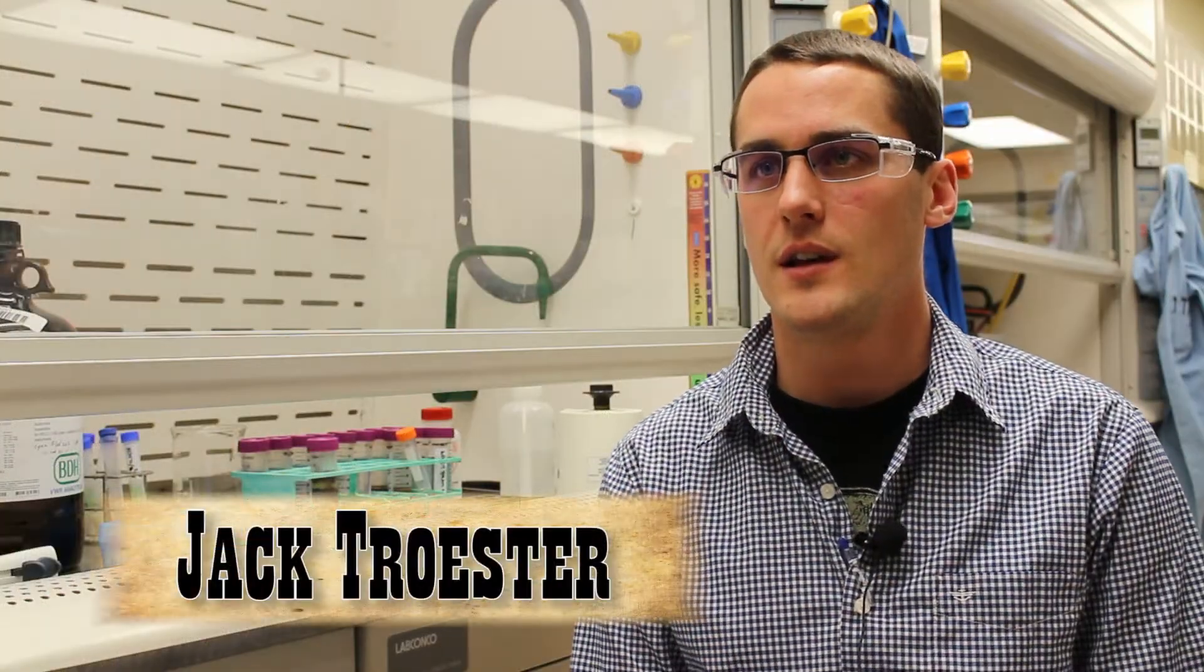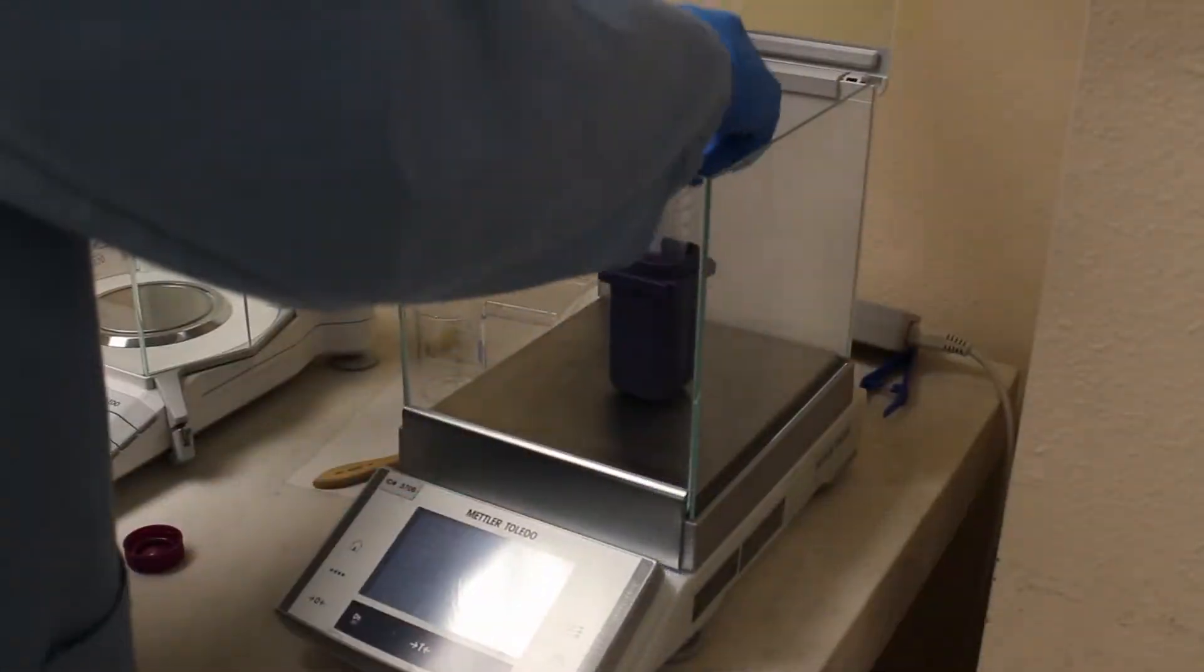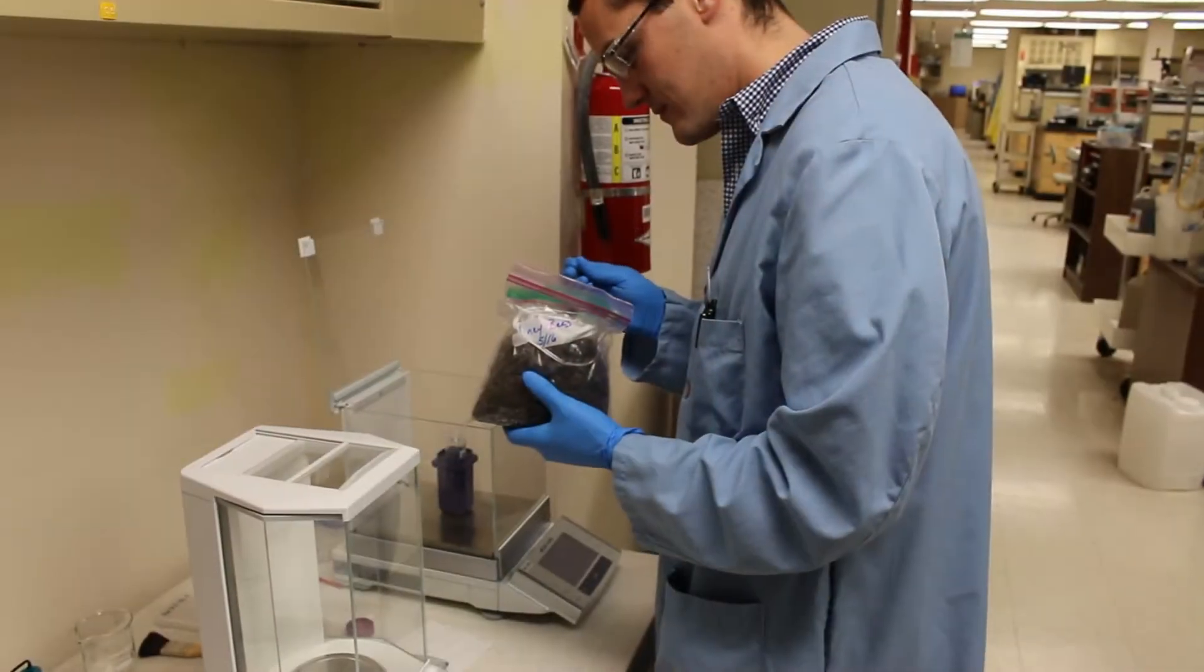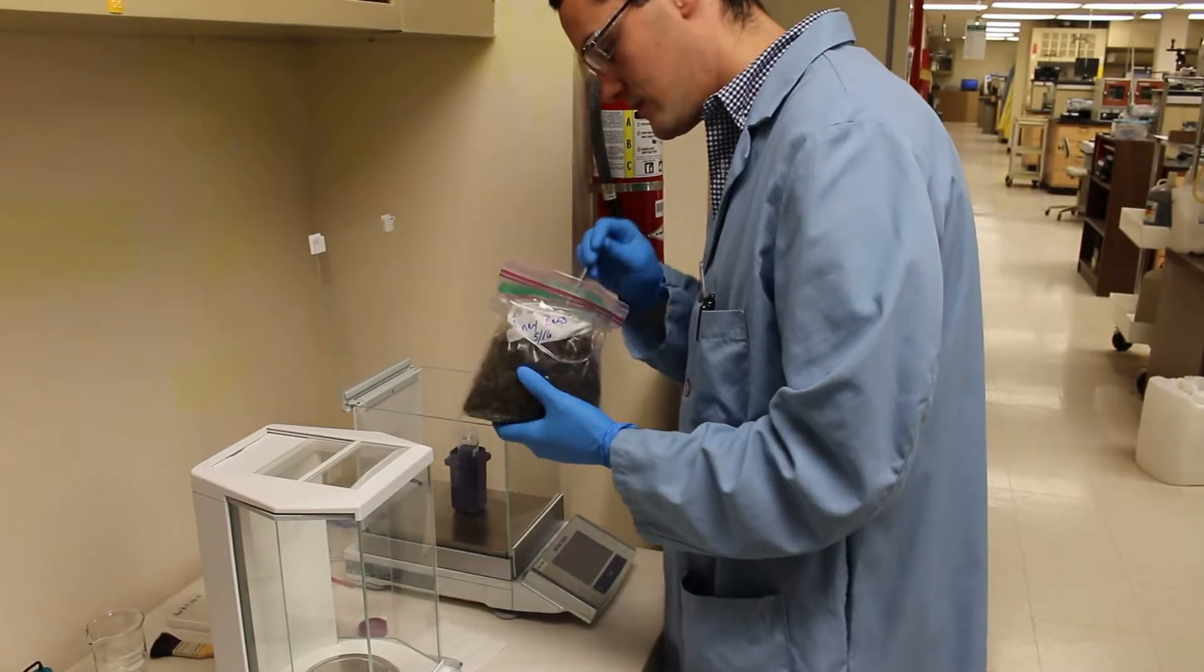My name is Jack Troester. I'm a laboratory scientist for the Department of Agriculture. I work in chemistry, which is feeds, forage, fertilizer, meat, water, fuel, and right now I'm working in pesticides and commodities, milks, and bees.